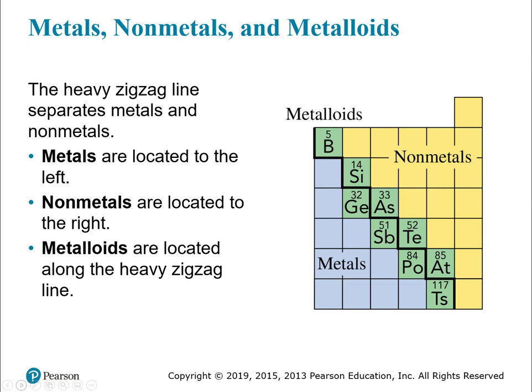Now let's talk about metals, non-metals, and metalloids. On the periodic table, metals are shown in a bluish color, metalloids in green, and non-metals in yellow. The metals are located on the left-hand side of the periodic table and, to be honest, most of the elements are metals — a large majority. The non-metals are on the far right: think carbon, oxygen, sulfur — those kinds of things. The metalloids form a zigzag line in between — they're not exactly metals, and not exactly non-metals.